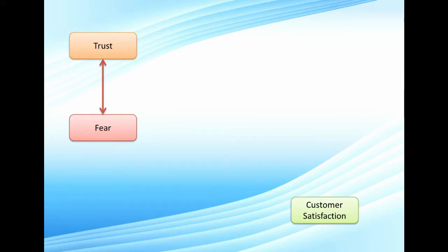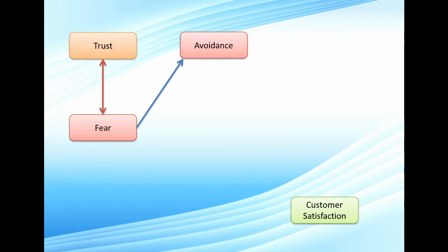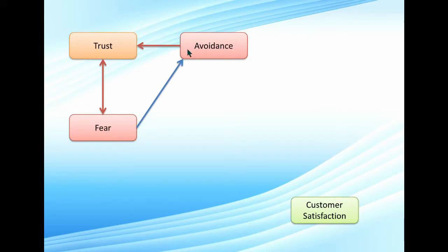What does fear in a working environment lead to next? That's avoidance. People tend to avoid difficult interactions. They'd rather not talk to one another, not be transparent about what they're doing, and avoid situations where they could get in trouble. So more fear means more avoidance. And when you don't know what your co-workers are doing, you tend to trust them less — so more avoidance means less trust.